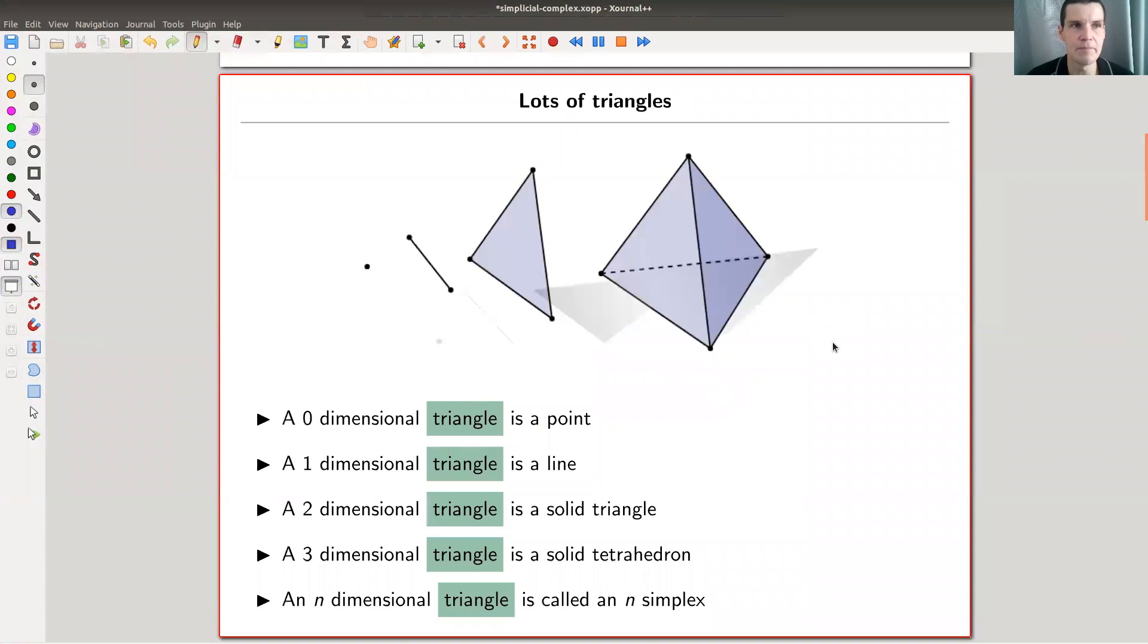So let's have a look. A simplex is just a version of a triangle in higher dimensions. A zero dimensional triangle is a point. A one dimensional triangle is a line. A two dimensional triangle is a triangle. Very good.